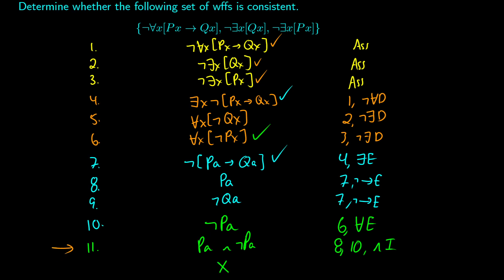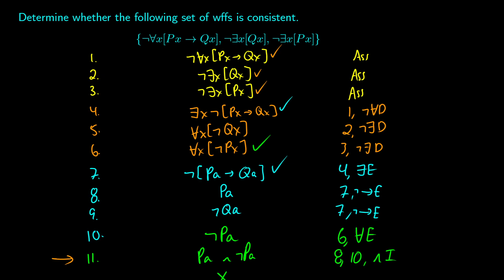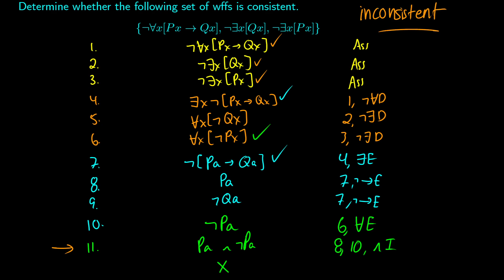Our only branch closes, so this set is inconsistent. Note that if we had done universal elimination first and got 'not pa', we would have needed a different constant for the existential elimination — we would have had to do 'not(pb arrow qb)' and we wouldn't have been able to get this contradiction. So do existentials first when possible, then universals after.